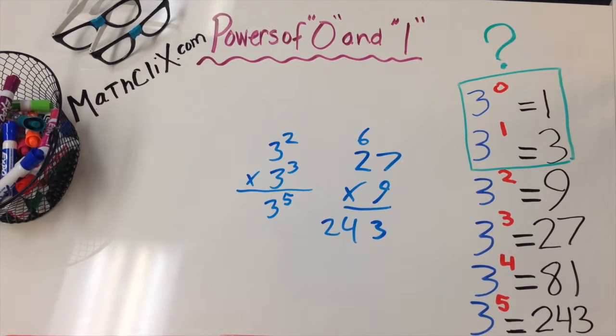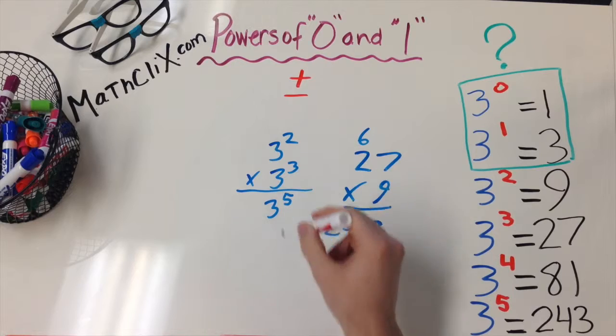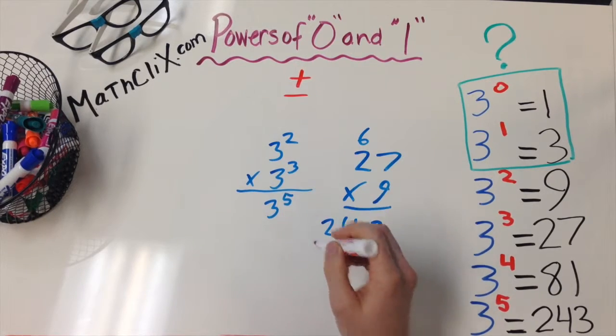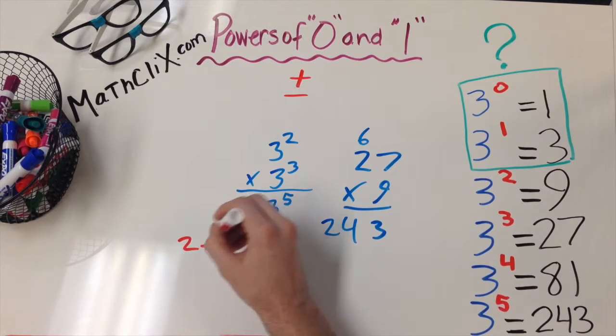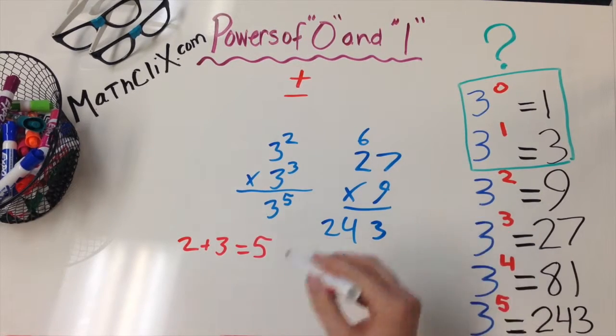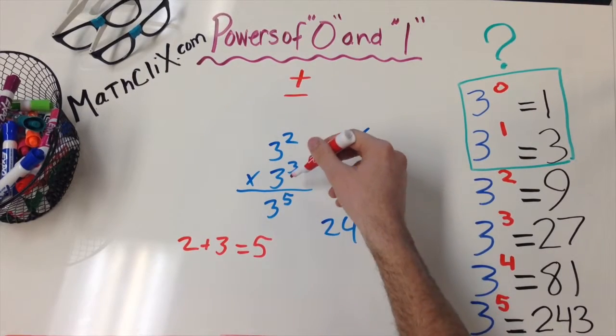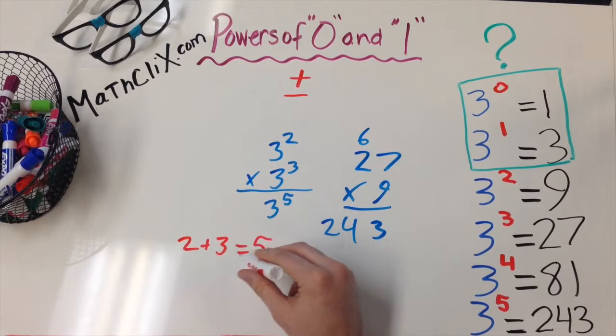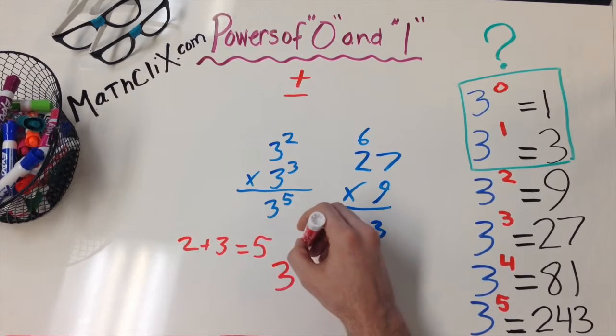Well, then notice that it really comes down to addition of the exponents of the similar bases, i.e. 2 plus 3 equals 5. So, when you're multiplying a similar base with a different exponent, you just add the exponents to get the same base raised to that exponent.